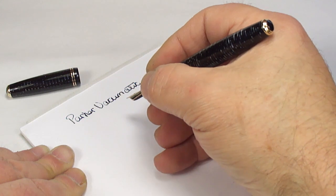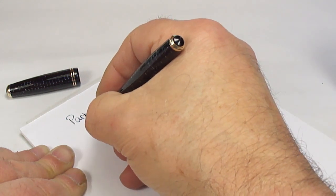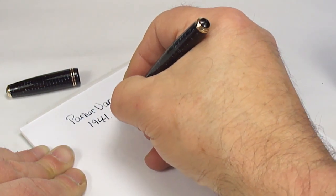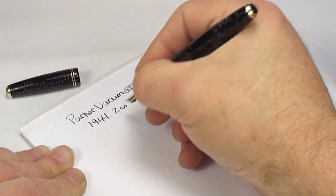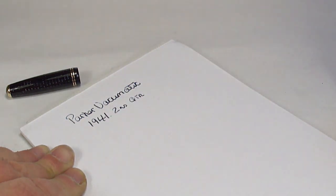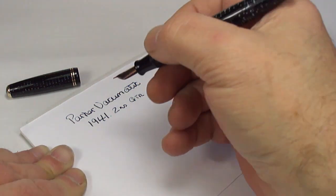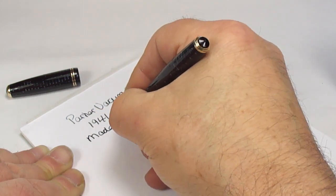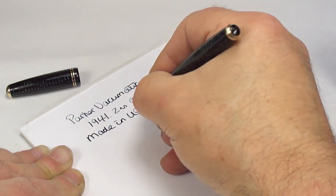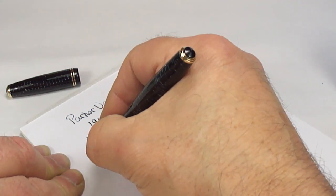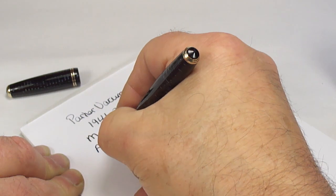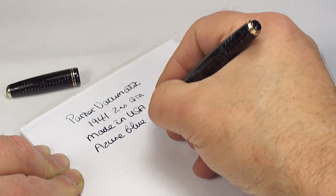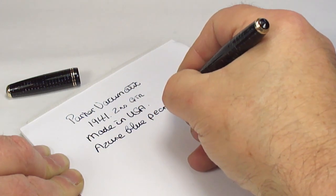Let me do a dip test. Parker Vacumatic, we're dating this one 1941, the second quarter of 1941 to be precise. Let me dip it again. Made in USA, and as we said, in this lovely azure blue pearl color.